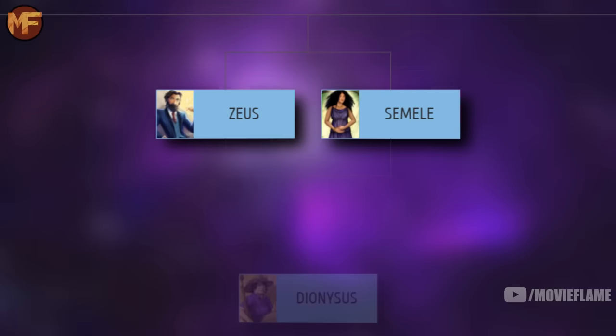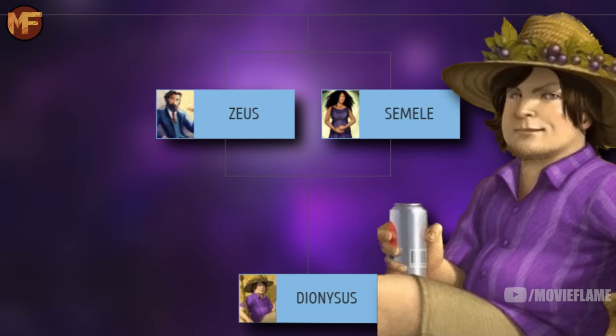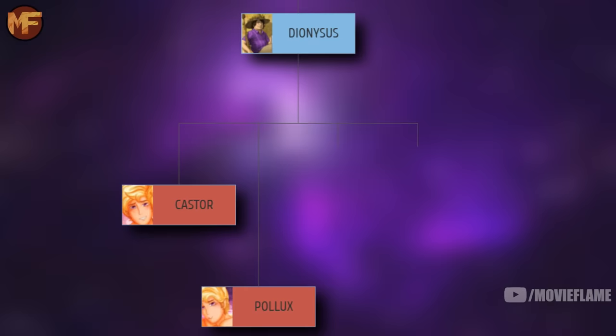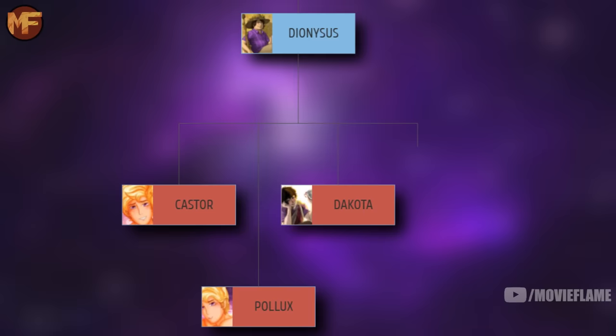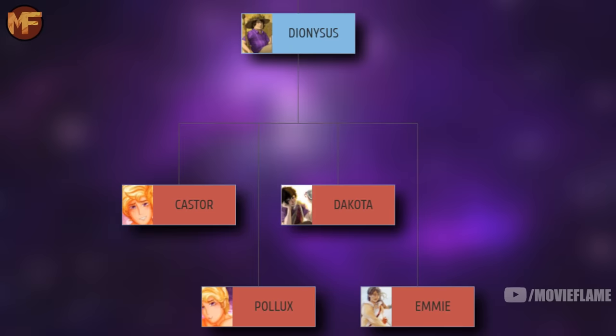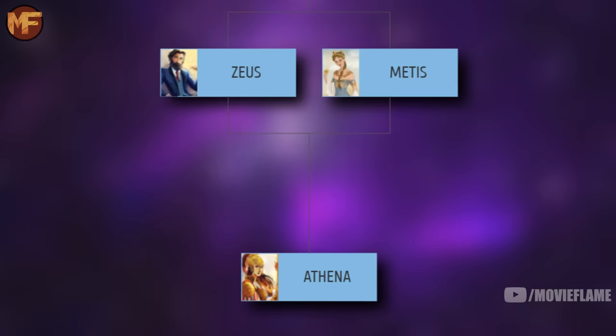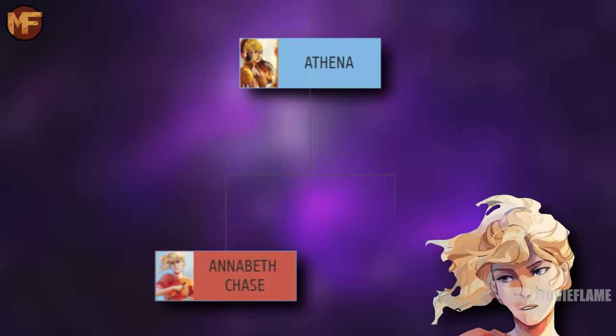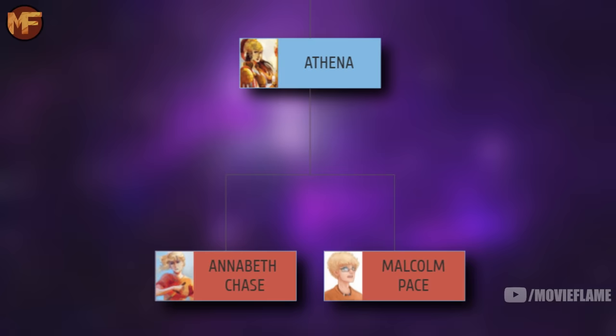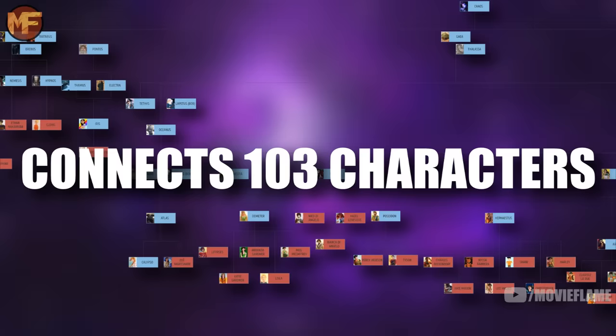Zeus's third affair was with Semele, the only mortal on this family tree. I decided not to add any of the demigods' mortal parents because it would look confusing and very scrambled. The reason I'm adding the mortal Semele is because her demigod child Dionysus later became a god and was even part of the 12 Olympians. Dionysus connects us to smaller demigods like Castor and Pollux at Camp Half-Blood, Dakota at Camp Jupiter, and Emmy from the Trials of Apollo — a legacy of Dionysus. Zeus's fourth affair was with Metis, with whom he had Athena, the goddess of wisdom and warfare. Athena connects to Annabeth Chase, the final Prophecy of Seven demigod, and Malcolm Pace, who took Annabeth's place as head counselor of the Athena cabin.